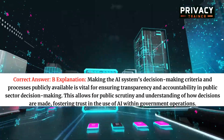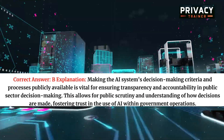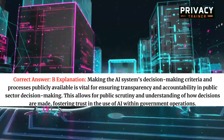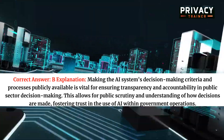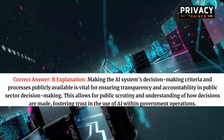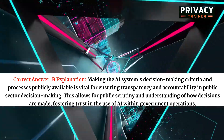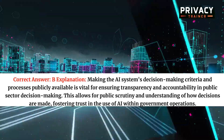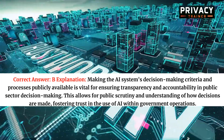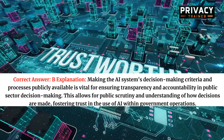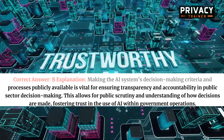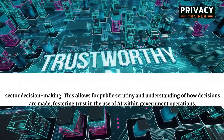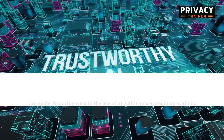Correct answer: B. Making the AI system's decision-making criteria and processes publicly available is vital for ensuring transparency and accountability in public sector decision-making. This allows for public scrutiny and understanding of how decisions are made, fostering trust in the use of AI within government operations.